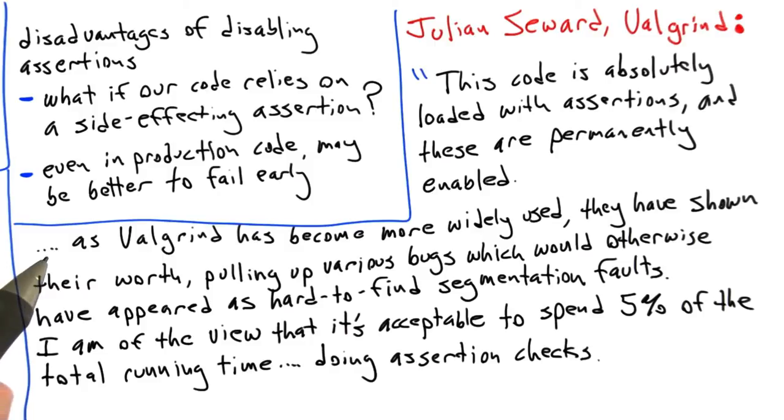And so Julian is saying here is that he's going to cost everybody 5% of total running time in order to make testing and debugging of Valgrind easier.